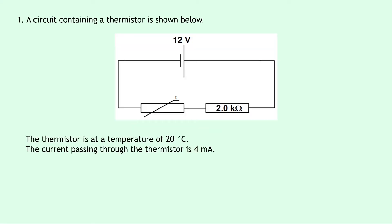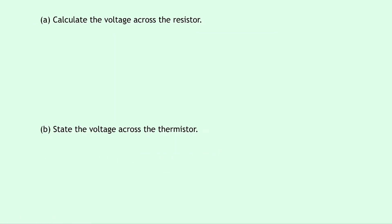Question 1 says a circuit containing a thermistor is shown below. We've got a 12 volt battery, a thermistor, and a 2000 ohm resistor in series with it. The thermistor is at a temperature of 20 degrees Celsius, and the current passing through the thermistor is 4 milliamps. Part A says to calculate the voltage across the resistor. To find the voltage we know the resistance, but we also need to know the current passing through it.